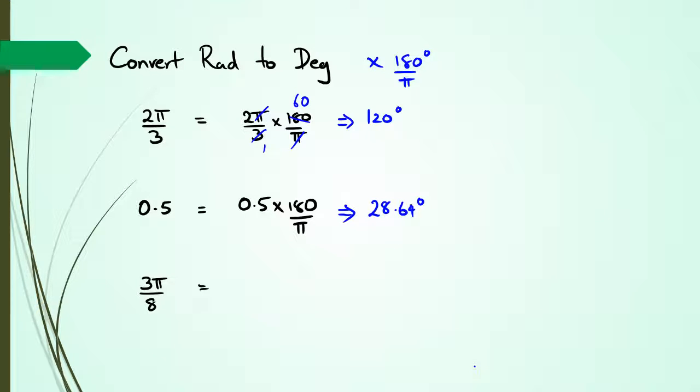And then when I have 3 pi over 8 multiplied by 180 over pi, I cancel the two pi's and I have 67.5 as my answer for the degrees.